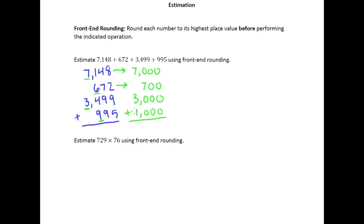So then we can add these up rather quickly because we just get two rows of zeros. This column only has a 7 in it, and add those up and you get 11. So our estimation for this sum is 11,700.